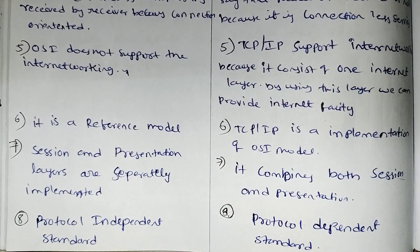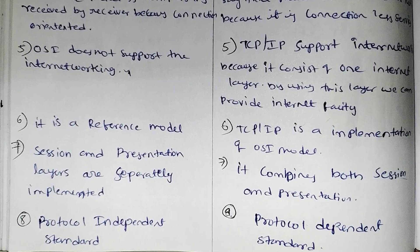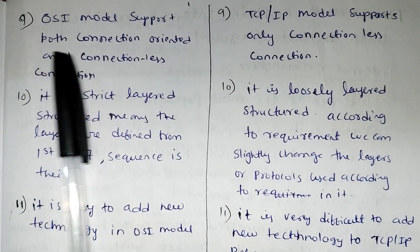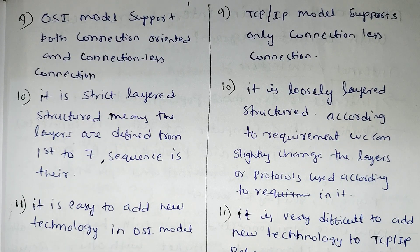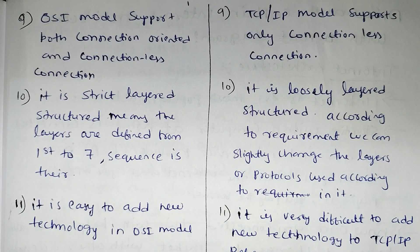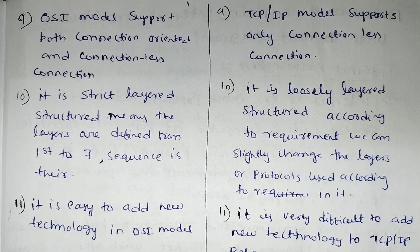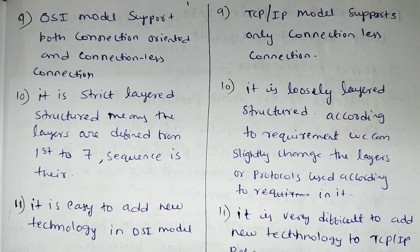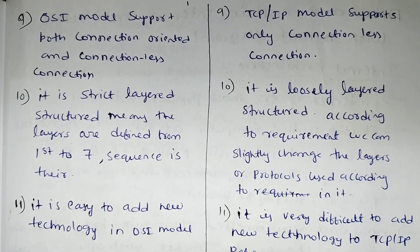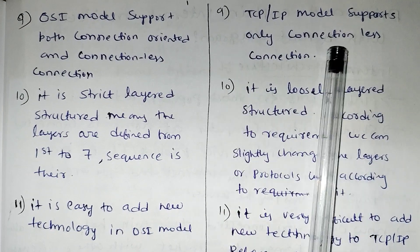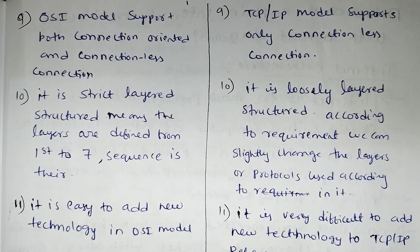OSI model supports both connection-oriented and connectionless connections. In a connection-oriented setup, the sender sends data to the receiver and receives an acknowledgement. TCP/IP model supports only connectionless connections.